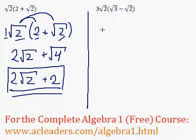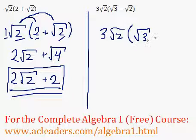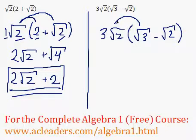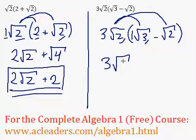How about this guy over here? So 3 root 2 times root 3 minus root 2. So again, we're going to distribute. And we multiply inside and inside. So the 3 multiplies the 1. So 3 times 1 is just 3. And root 2 times root 3 is root 6.